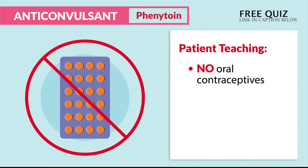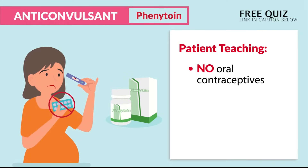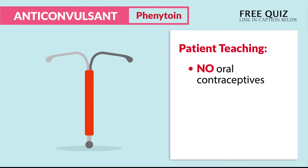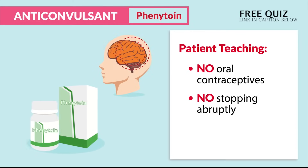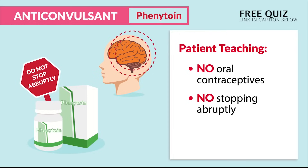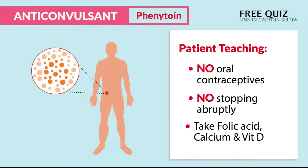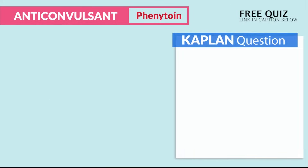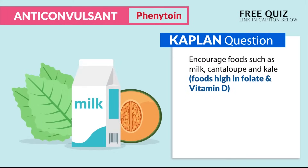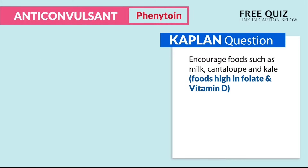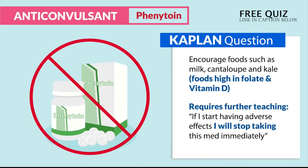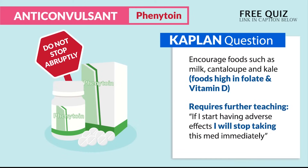For patient teaching: there are no oral contraceptives — phenytoin deactivates the pill, leading to accidental pregnancies, so we teach patients to use alternative birth control like an IUD. There is no stopping abruptly; this goes for any drug acting on the brain. We also take folic acid, calcium, and vitamin D, since this drug decreases folic acid absorption and decreases bone density. Kaplan mentions encouraging foods such as milk, cantaloupe, and kale, which are high in folate and vitamin D. Never stop taking this medication immediately — we always taper off.